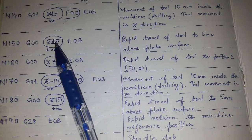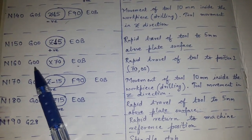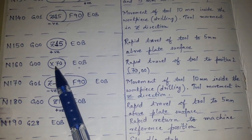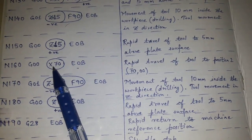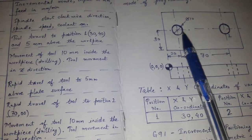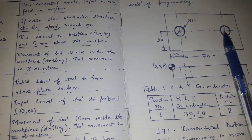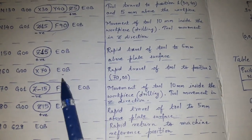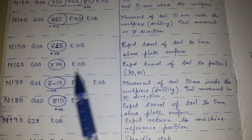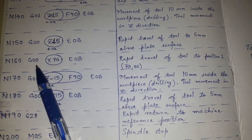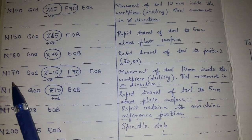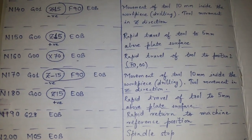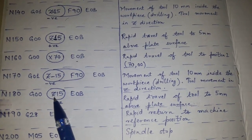N160 is G00 X70 — rapid travel to position 2. Only X direction movement is needed since Y remains the same. In incremental mode the current position becomes 0,0, so we only write X70 and do not mention Y. This rapid travel saves time and moves the tool to position 2.